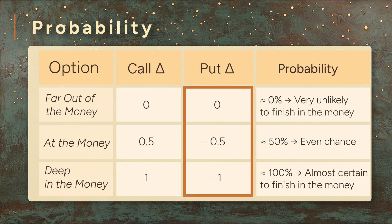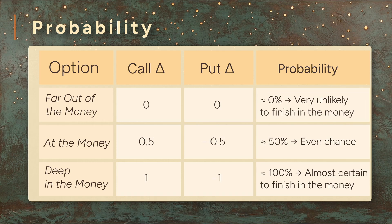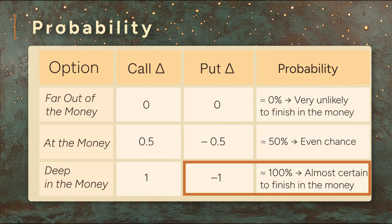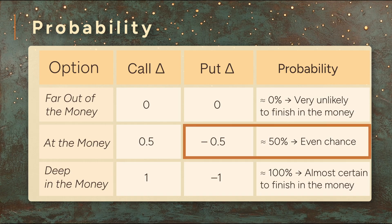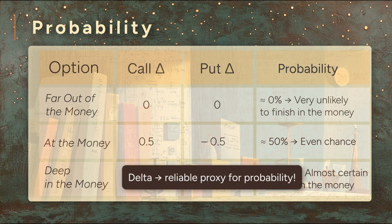And now for puts. Put deltas run from 0 to negative 1. Because probabilities aren't negative, we take the absolute value. A far out-of-the-money put has a delta near 0 — about a 0% chance of finishing in the money. A deep in-the-money put has a delta near minus 1, whose absolute value is 1 — roughly a 100% chance. At the money, the absolute value of delta is about 0.5 — about a 50% probability. This isn't just a convenient rule of thumb; it's grounded in the math of option pricing. If you examined thousands of options, you'd find that delta closely matches the fraction that actually finish in the money. That's why quants treat delta not just as a measure of sensitivity, but as a fast, reliable proxy for probability.